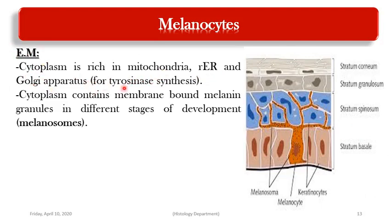By electron microscopy, melanocytes are rich in mitochondria, rough endoplasmic reticulum, and Golgi apparatus — organelles important for tyrosinase synthesis. In addition, they contain melanosomes: membrane-bound granules containing melanin pigment in different stages of development. The cytoplasmic branches of the melanocyte extend between the keratinocytes of the stratum basale.